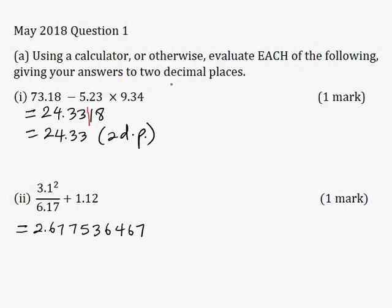They asked me to approximate this number to two decimal places. I'm going to count after the decimal point: 1, 2. Drawing a line here and looking at the digit to the right, we can see it is 7. Since 7 is 5 or more, we add 1 to the second decimal place to make it 8. So our answer is 2.68 to two decimal places.